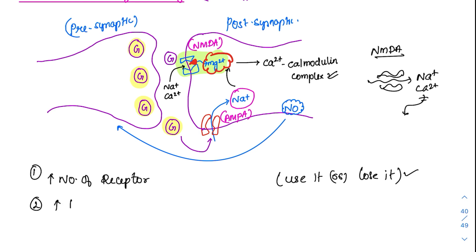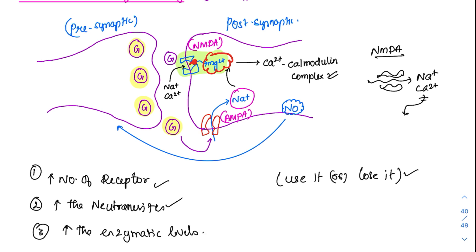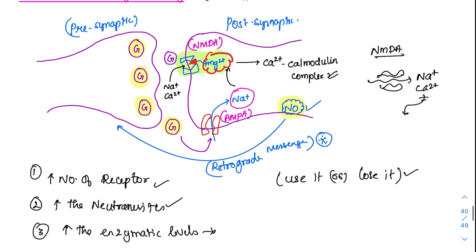Next, continuous activation will also increase the neurotransmitters and increase the enzymatic levels. It also produces one more neurotransmitter — nitric oxide. This nitric oxide acts like a retrograde messenger. If it is constantly produced, it will tell the pre-synaptic terminal that this particular connection needs to be strengthened. It acts like a retrograde messenger, keeps on messaging, and improves the connection.